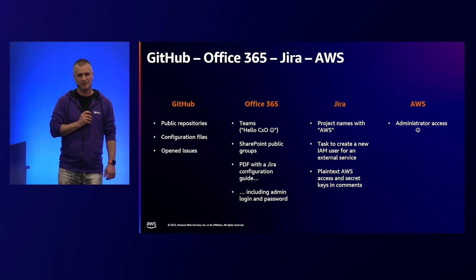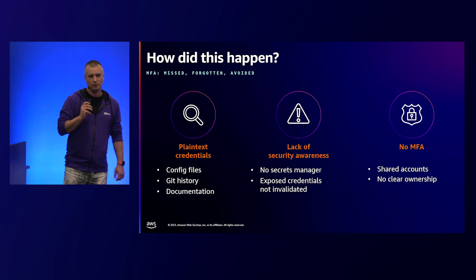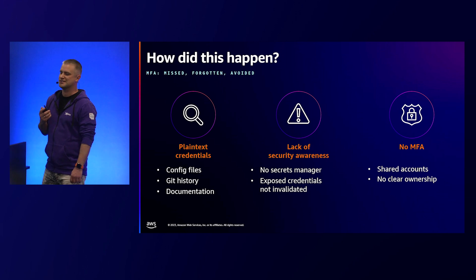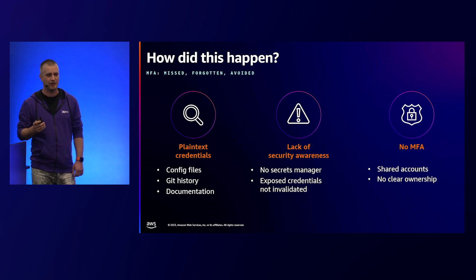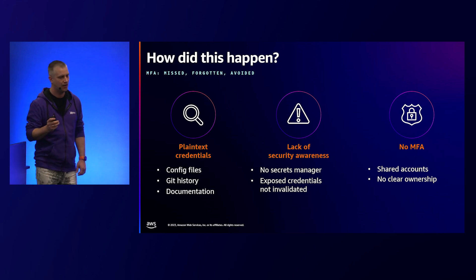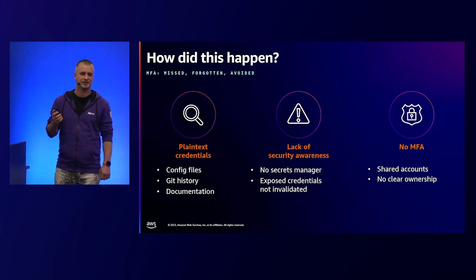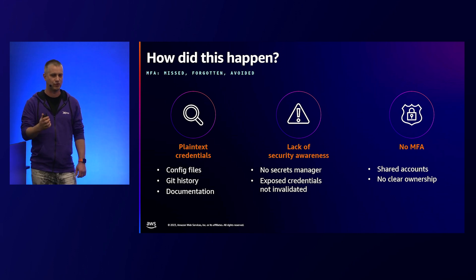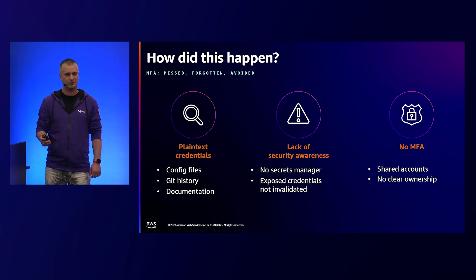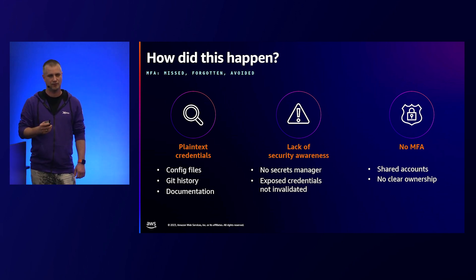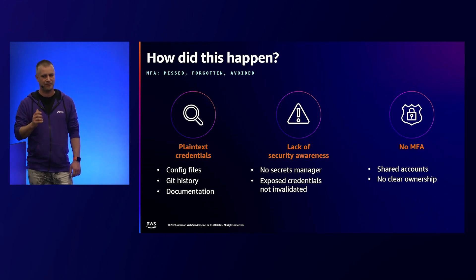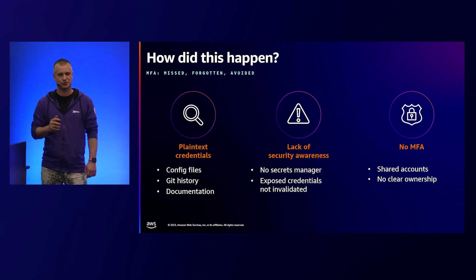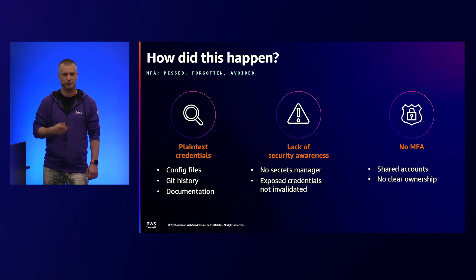Linking small misconfigurations may lead someone to access your accounts. What went wrong here? First, plain text credentials in config files — please don't do that. There are vaults, secret managers, parameter stores where you can safely store your passwords and access keys. Also, lack of security awareness: the team that created the PDF shouldn't have put passwords in a PDF shared with the company, and the PDF was accessible by anyone. Two things to remember: MFA — wherever possible, please force your users to use MFA. Because if there is no MFA and I have your username and password, I can log in and do whatever I want with your user in the cloud.